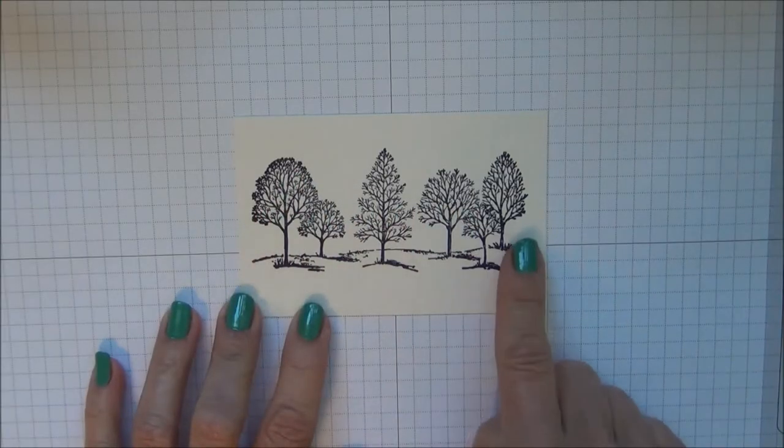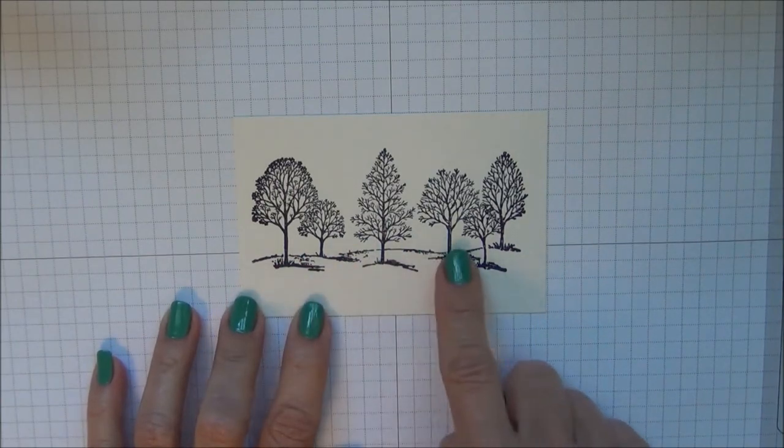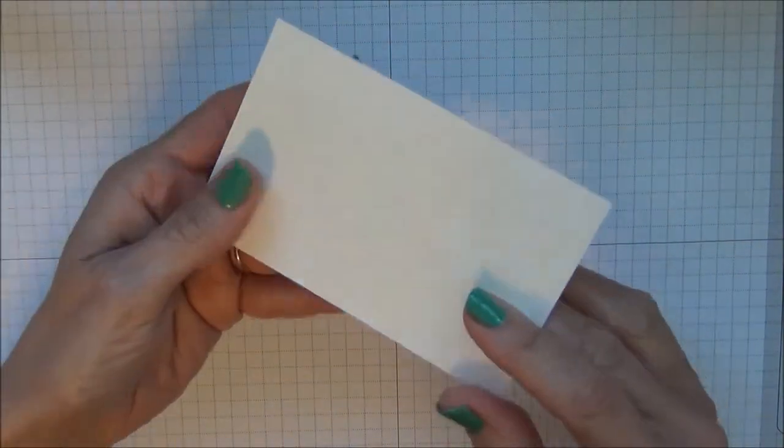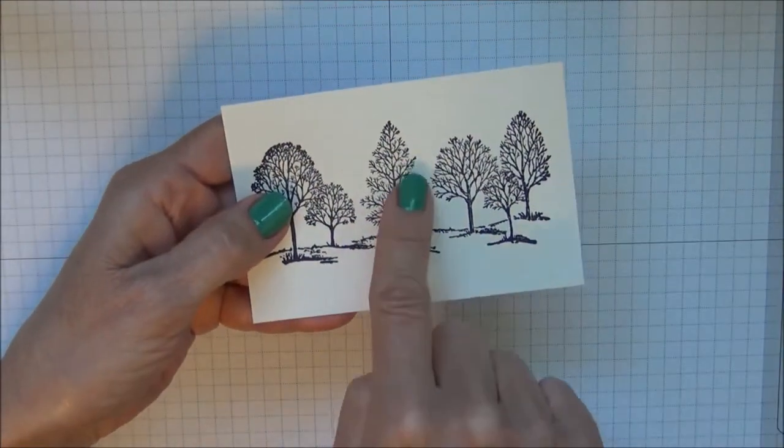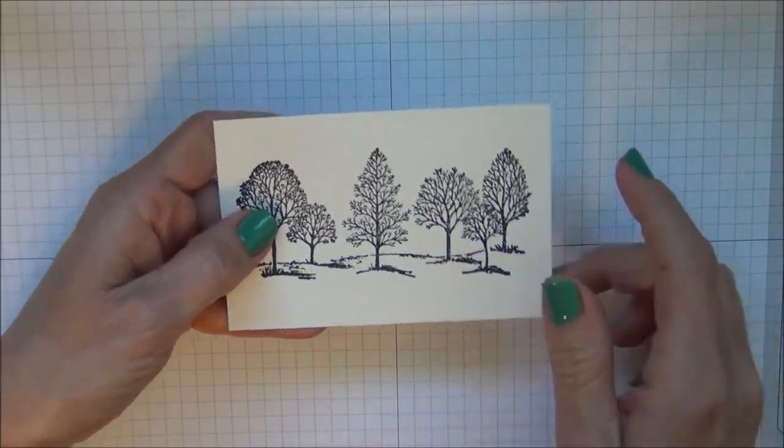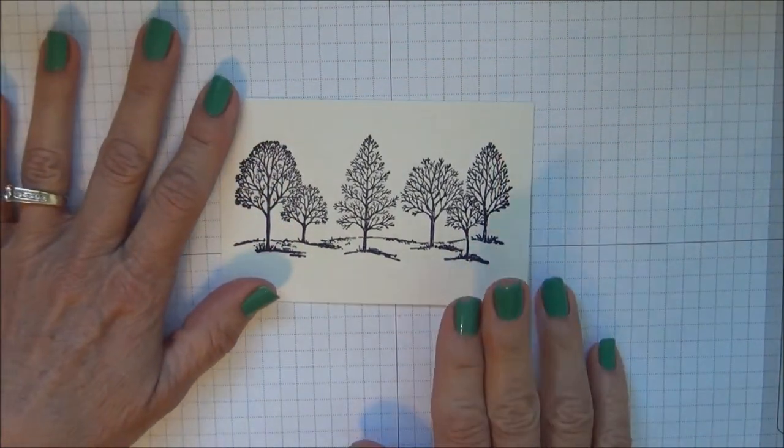I inked it up in black Stazon and I pressed very firmly when I stamped it on this paper. The watercolor paper has a little bit of texture to it, so to still get all the fine detail in that stamp, you want to apply a lot of pressure when you stamp it.